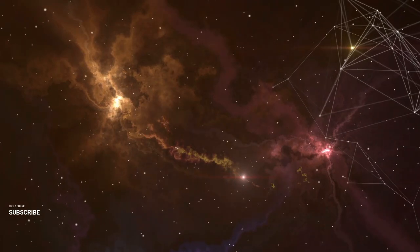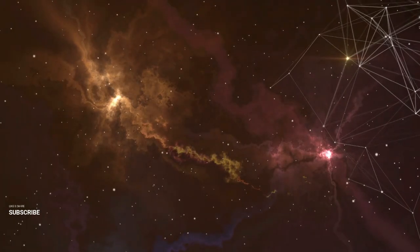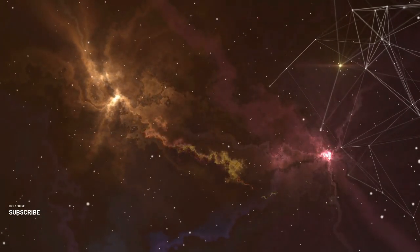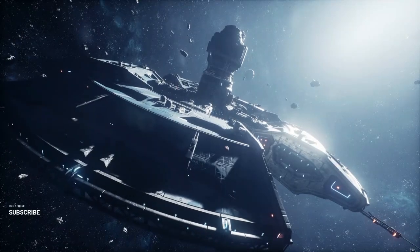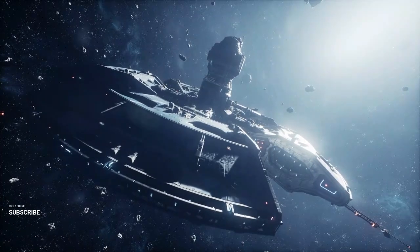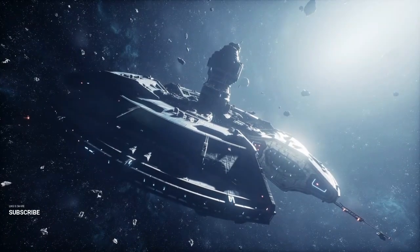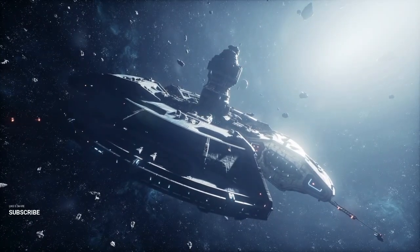The James Webb Space Telescope is revolutionizing our understanding of the early universe. By observing infrared light from distant galaxies, JWST is allowing scientists to look back in time to the first few hundred million years after the Big Bang. This period, known as the cosmic dawn, is when the first stars and galaxies began to form. JWST's incredible sensitivity means it can detect the faint light from these early structures, giving us a glimpse of how the universe evolved from a hot, dense state to the complex web of galaxies we see today. These observations could provide answers to some of the biggest questions in cosmology, including how the first galaxies came together and what role dark matter played in their formation.